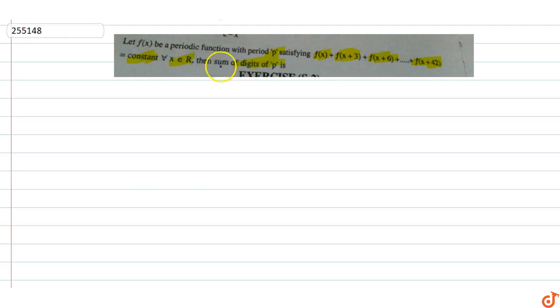So f(x) is a periodic function satisfying the condition f(x) + f(x+3) + f(x+6) up to f(x+42) equals constant C.